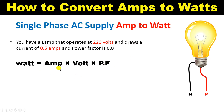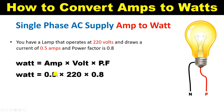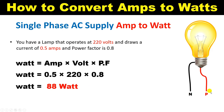Putting all the values into the formula: Watt = Ampere × Voltage × Power Factor. So Watt = 0.5 × 220 × 0.8. When we multiply all the values, the answer comes as 88 Watt. So if you want to find the power rating for a single phase power supply, use this formula.